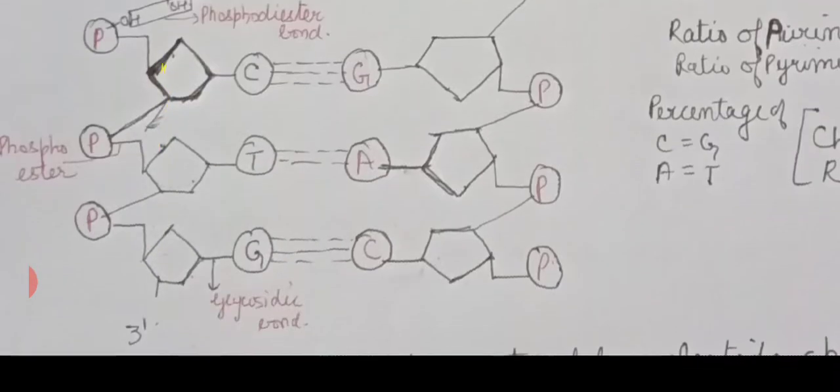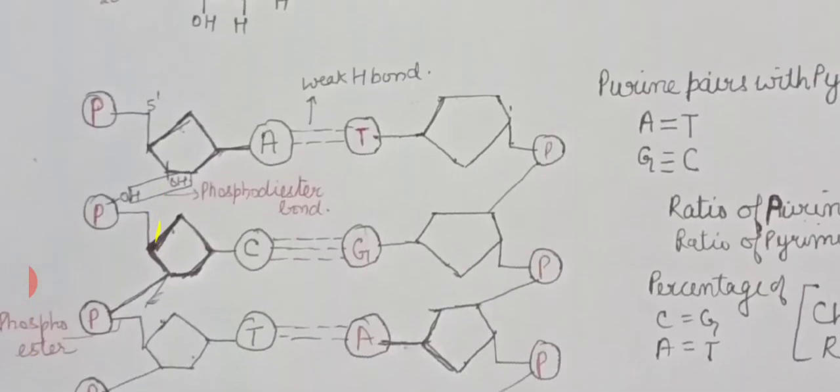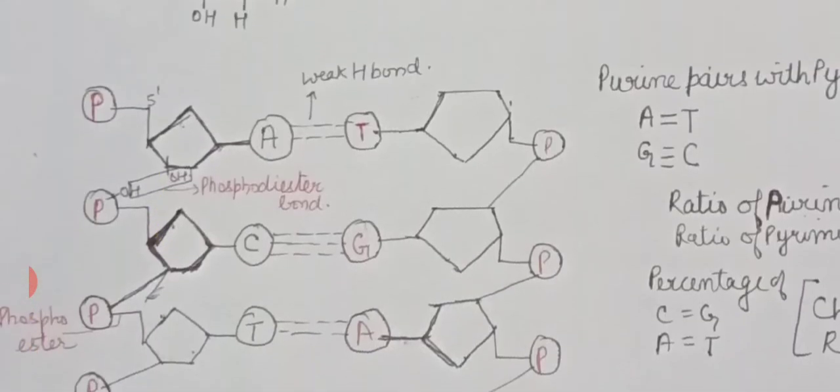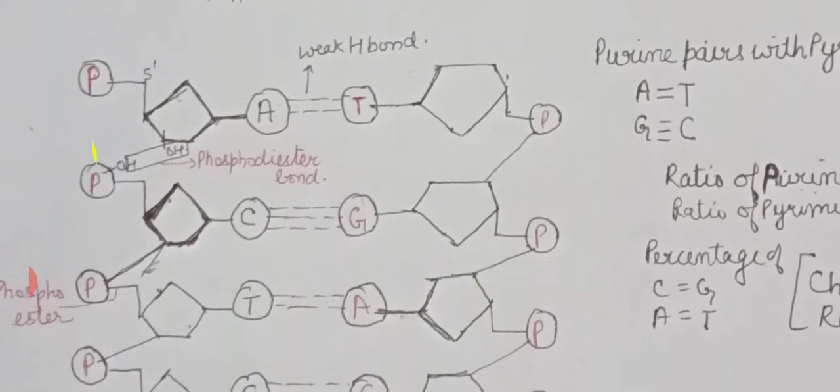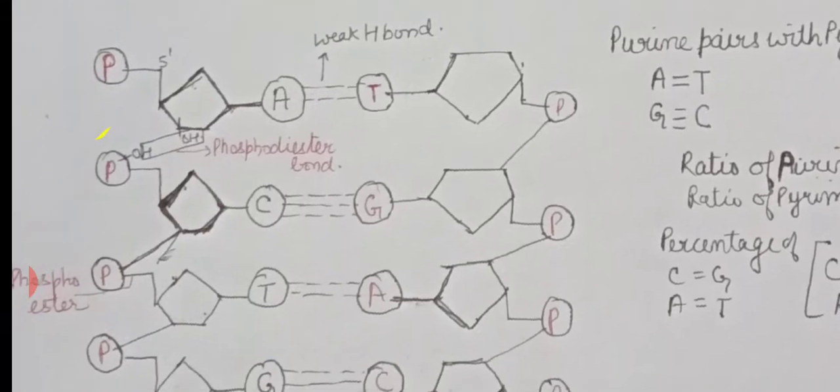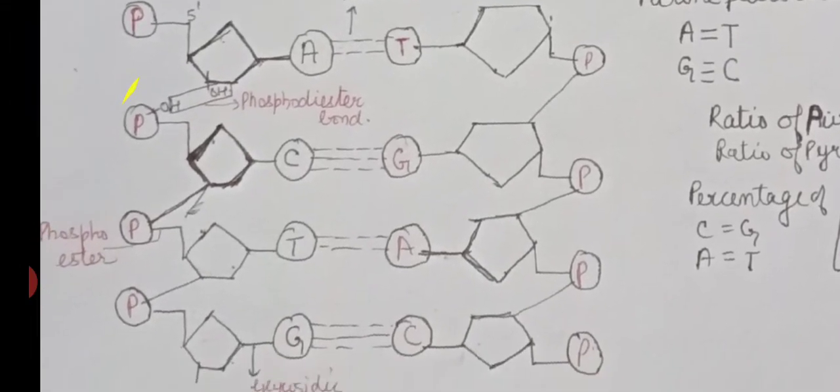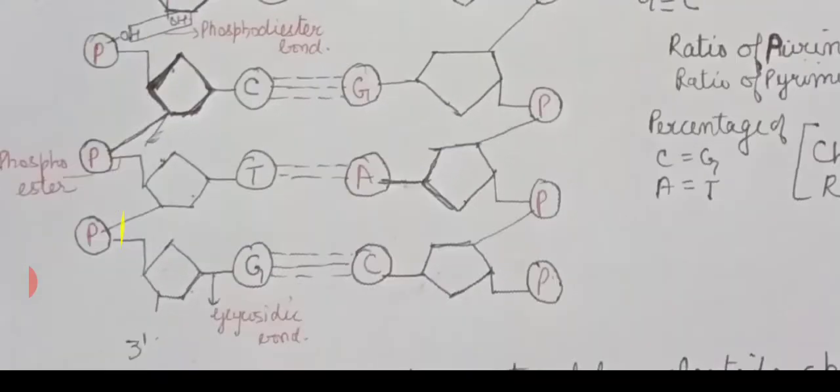In the polynucleotide chain, the first nucleotide has a free fifth position, which is called the five prime end, and the other terminal is called the three prime end, defining the polarity of the chain.